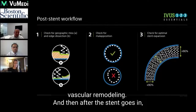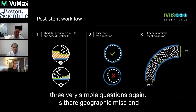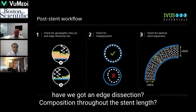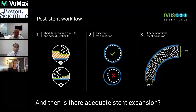After the stent goes in, three very simple questions again: is there geographic miss? Have we got an edge dissection? Apposition throughout the stent length — and then, is there adequate stent expansion?